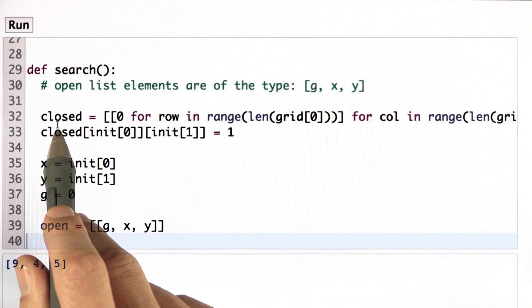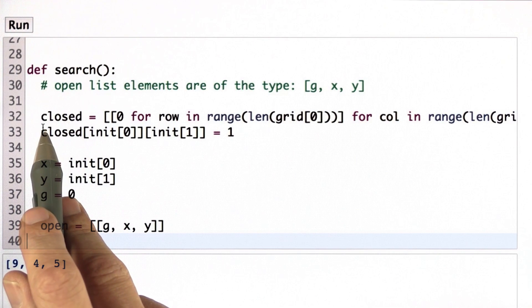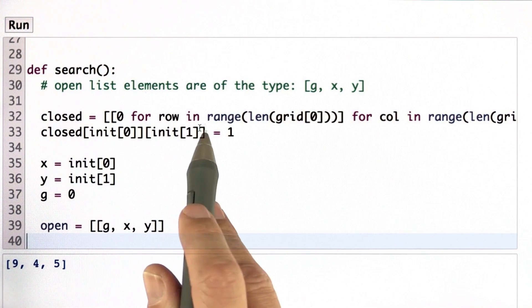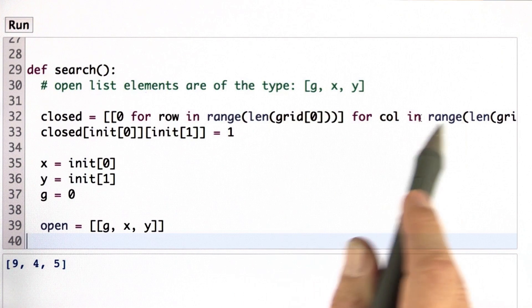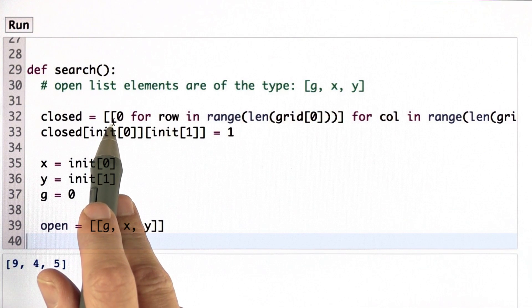To check cells once they're expanded, so I don't expand them again, I define an array called closed the same size as my grid. It has two values, 0 and 1. 0 being it's still open, 1 meaning it's being closed. You could also use Booleans.